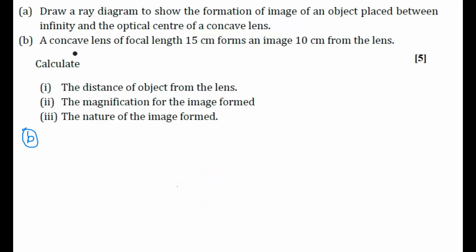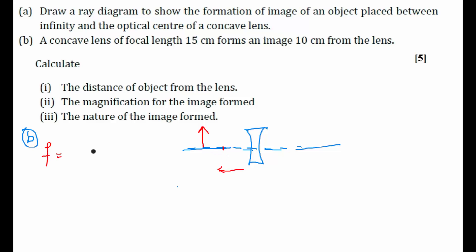Part B. A concave lens has a focal length of 15 cm. For a concave lens, if the object is placed on the left side, the focus will also be on the left side, so focal length f = −15 cm. The lens forms an image 10 cm from the lens, so image distance v = −10 cm (also on the left side). We need to calculate the object distance u and the magnification m. We know from the lens formula: 1/v − 1/u = 1/f. Here f and v are given; u is the only unknown.